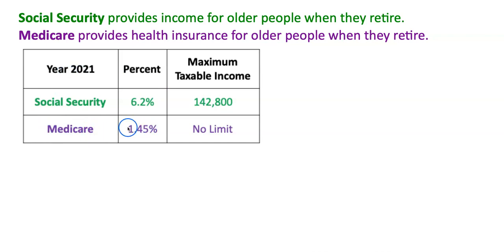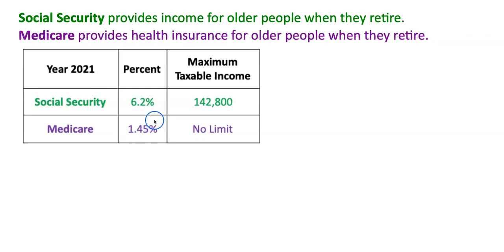For Medicare, the rate is 1.45 percent, which means that for each hundred dollars you make, one dollar and 45 cents is taken out of your paycheck. Your employer has to pay this amount as well, and there is no limit on maximum taxable earnings for Medicare — just for Social Security.